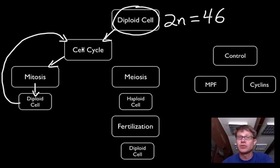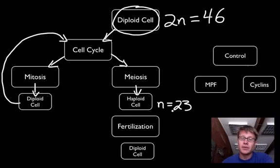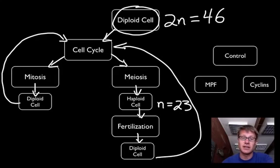The way that we make new cells in our body or replace cells that are damaged is mitosis. In meiosis we're going to take a normal diploid cell and we're actually going to make a haploid cell. We're going to make sperm and egg. So in humans n now equals 23. Fertilization where egg meets sperm is going to combine those two cells to make a diploid cell. And now that diploid cell can enter into the cell cycle again.